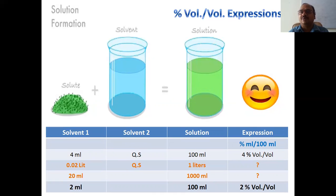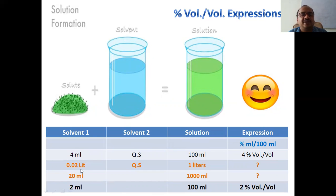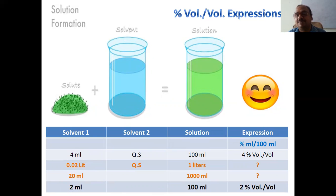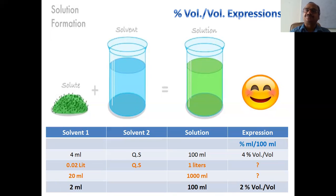For percentage volume by volume: the unit is ml per 100 ml. Example: 4 ml of solute measured in measuring jar, made up to 100 ml — that is 4% volume by volume. Problem: 0.02 liters solute in 1 liter solution. Convert: 0.02 liters = 20 ml; 1 liter = 1000 ml. For 100 ml: 20/10 = 2 ml per 100 ml = 2% volume by volume.